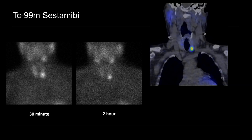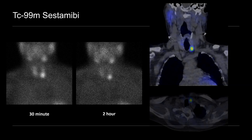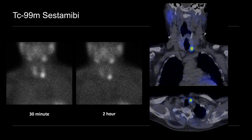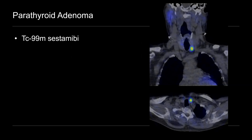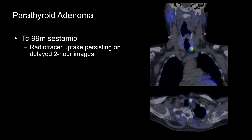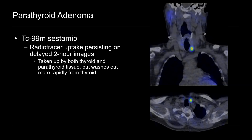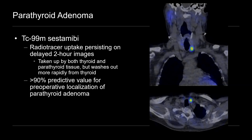This is better localized on the SPECT CT images, where the nuclear medicine images are overlaid onto a CT. You can see marked avidity at the lower pole of the thyroid on coronal imaging, and also on the axial image. These scans are very helpful for localization — there will be radiotracer uptake that persists within a parathyroid adenoma on two-hour delayed images. Sestamibi is initially taken up by both thyroid and parathyroid tissue but washes out more rapidly from the thyroid. There is a greater than 90% positive predictive value for preoperative localization of parathyroid adenomas, and SPECT CT can further aid with anatomic localization.